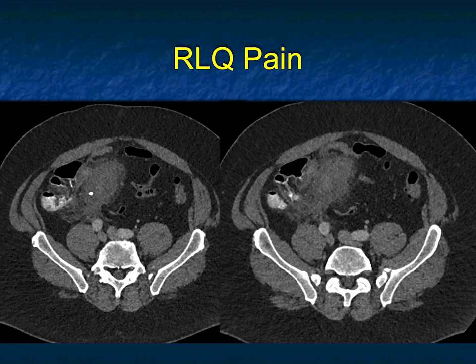Patient with right lower quadrant pain — there's a large inflammatory mass and a calcification. Right lower quadrant: perforated cecum, Meckel's diverticulum. But at the end of the day, I'm always thinking appendicitis. And when you have the calcification, this is a perforated appendix with a right lower quadrant abscess.